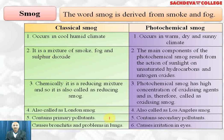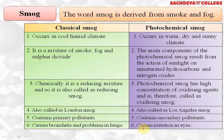Classical smog contains primary pollutants, whereas photochemical smog contains secondary pollutants, which are extremely harmful. Primary smog causes bronchitis and problems in the lungs, whereas photochemical smog causes irritation in the eyes.